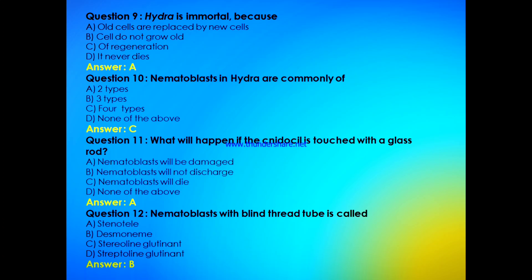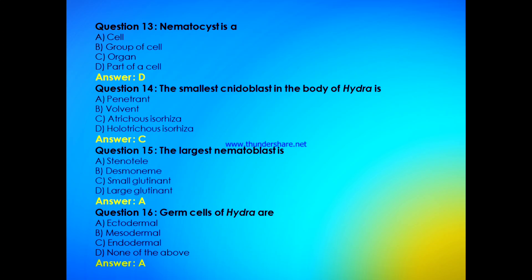A nematocyst with a blind-end thread tube is called — stenotele, desmoneme, stereolin glutinant, or streptolin glutinant? The answer is B, that is desmoneme. Next question: a nematocyst is — a cell, a group of cells, an organ, or part of a cell? The answer is D — a nematocyst is a part of a cell.